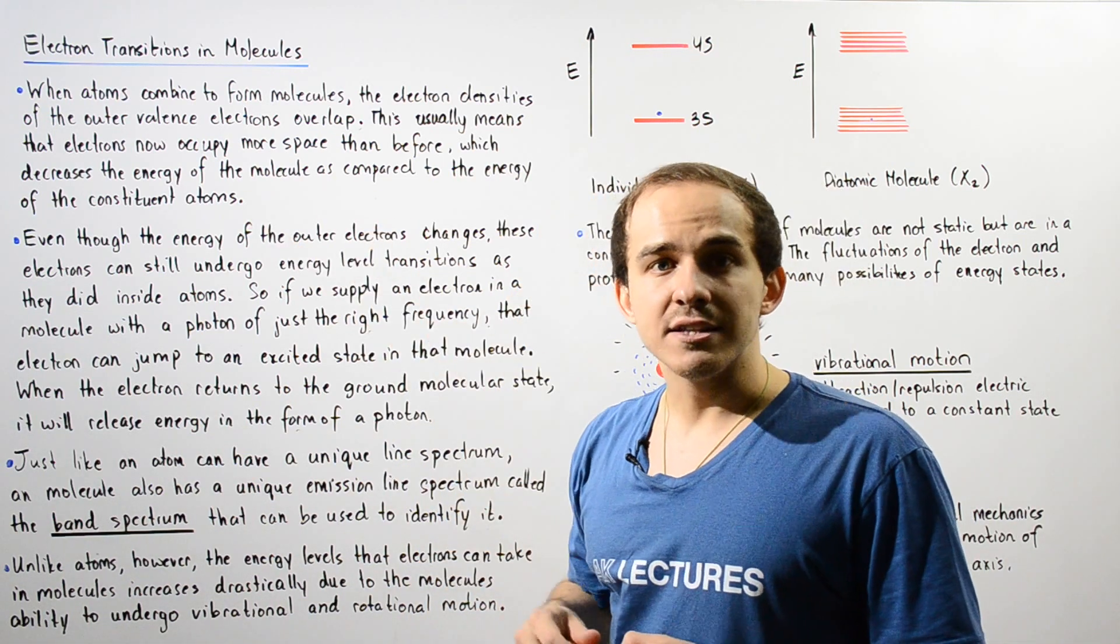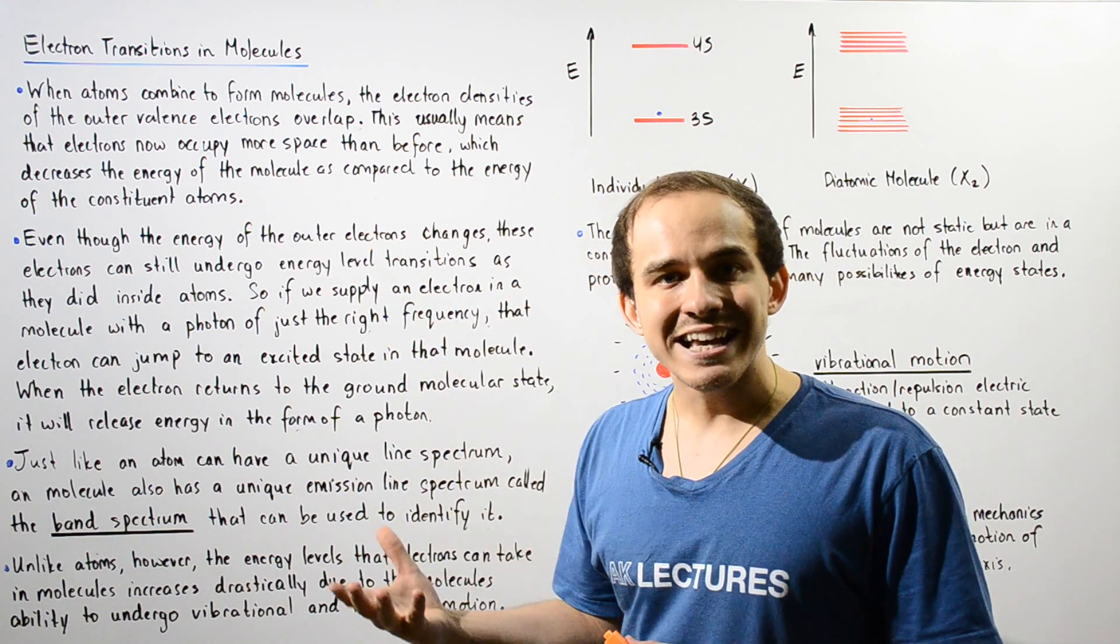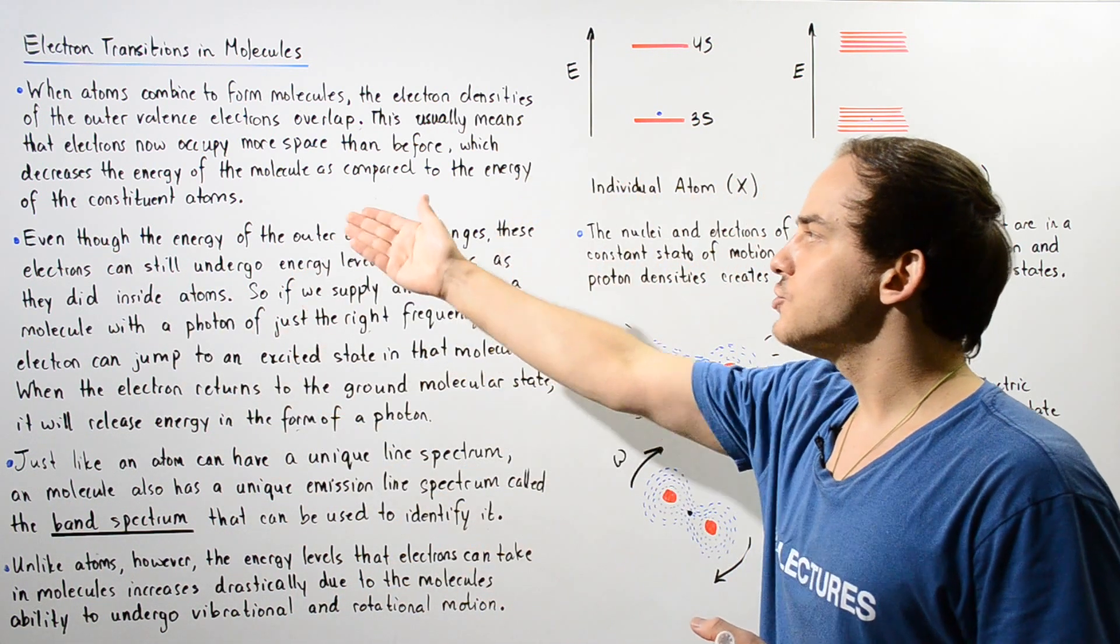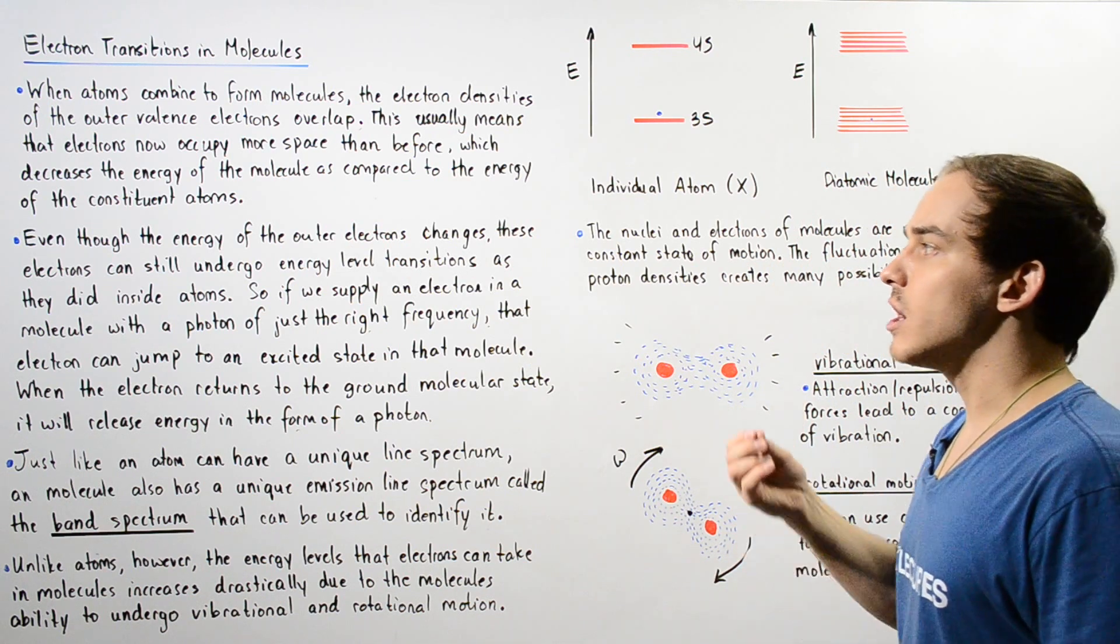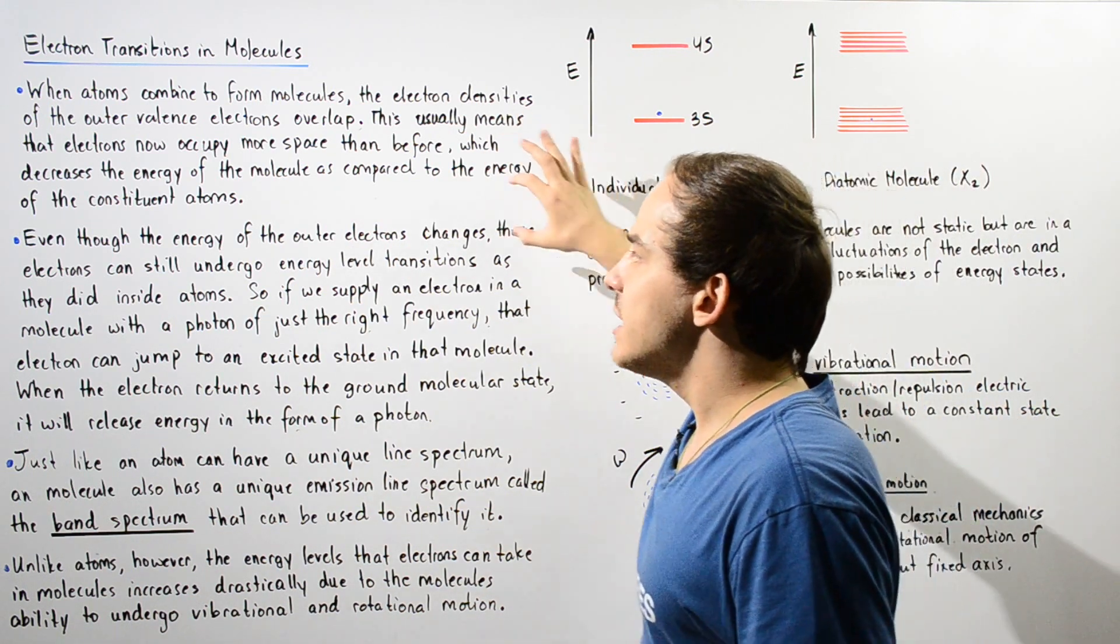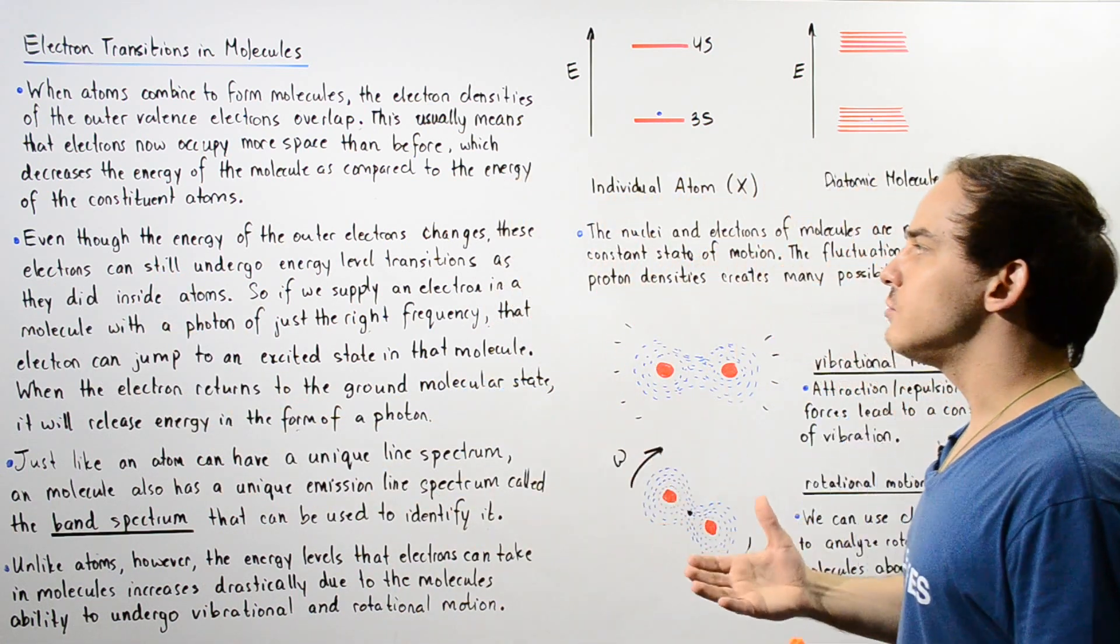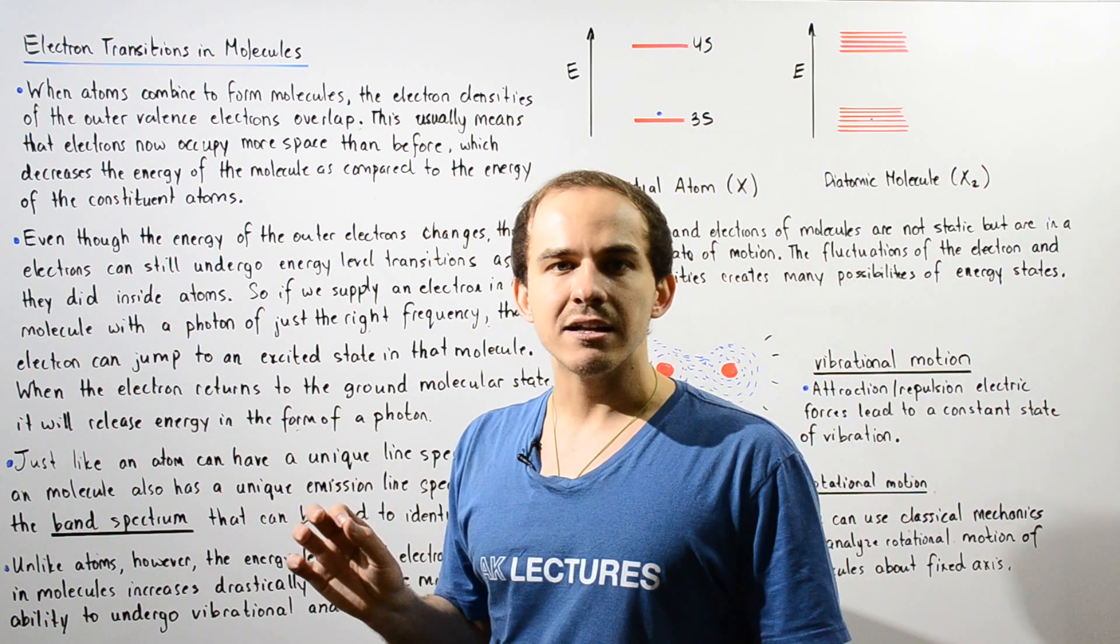So even though the energy of the outer electrons of our molecules changes, these electrons can still undergo energy level transitions as they did inside atoms.